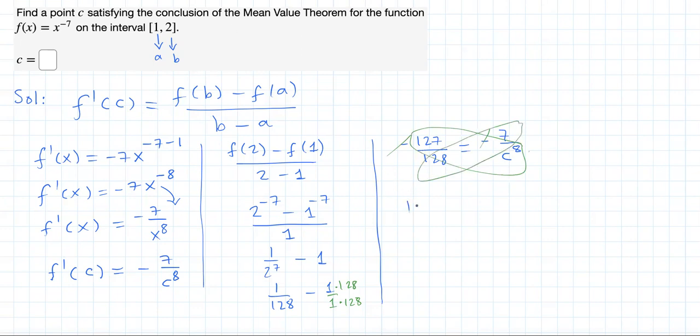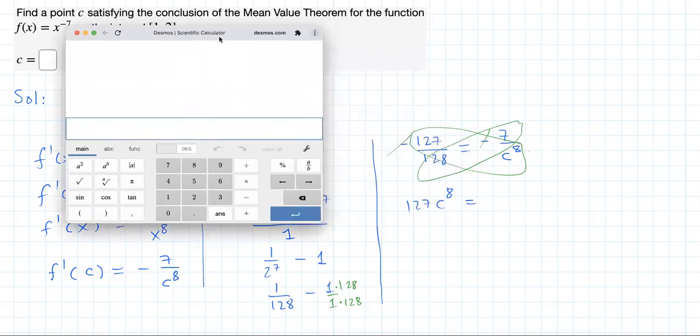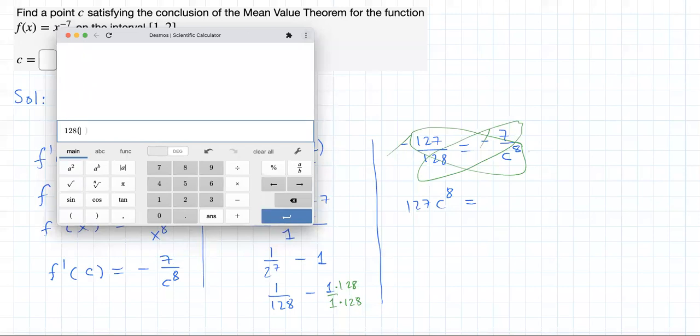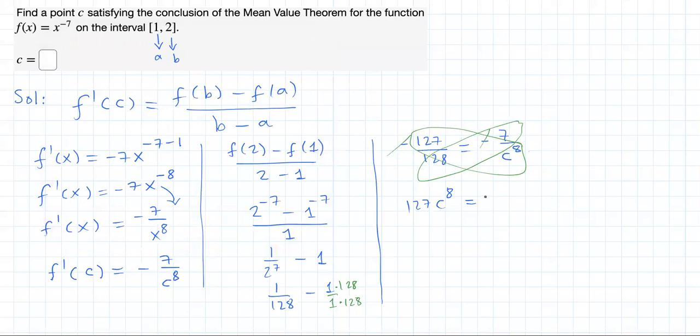127 multiplied by C^8 should equal 128 times 7. But what is that? 128 times 7 equals 896.